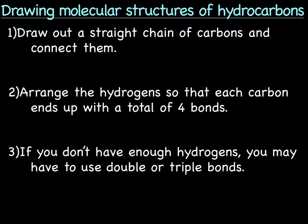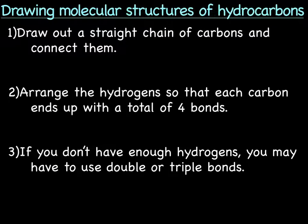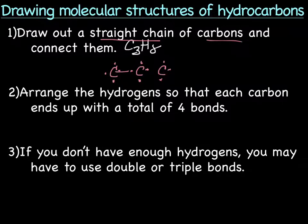All right, so how do we draw structures of hydrocarbons? We'll start with the molecular formula. So we'll use as an example C3H8. Okay, so the first thing you want to do is draw out the straight chain of carbons, keeping in mind that when we're talking about organic chemistry, it's made up of a carbon backbone. So we have three carbons, each carbon having four valence electrons. Okay, so those are going to connect together.